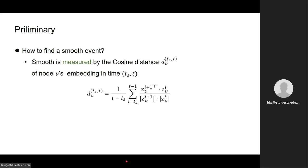So how to find a smooth event? In this paper, we use the cosine distance to measure the extent of smoothness. Given a user v and a time zone t_s to t, we define the smoothness as d_v^(t_s to t) as the average cosine distance of node embeddings between consecutive time steps as this equation shown below.